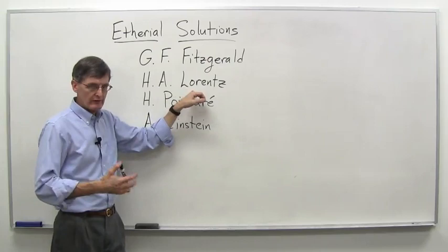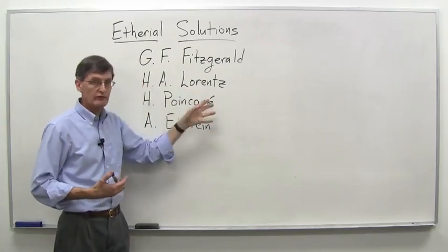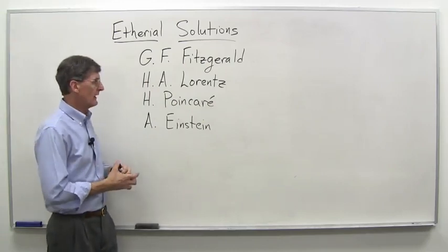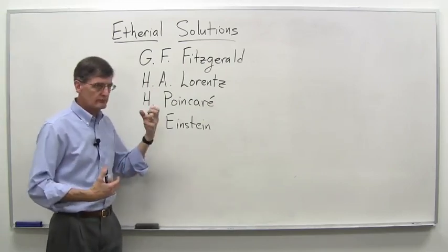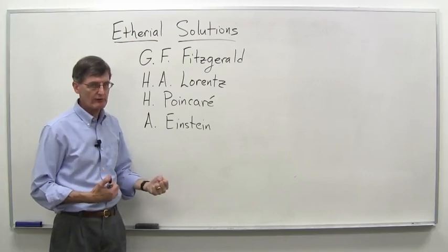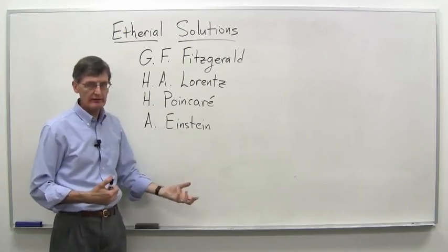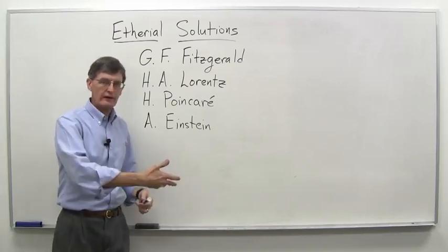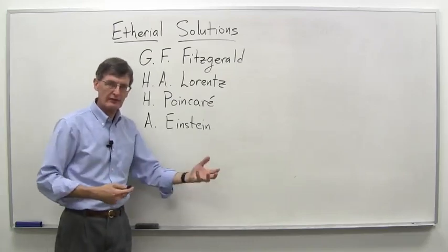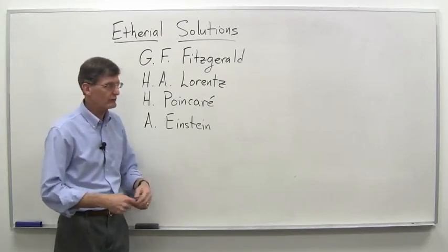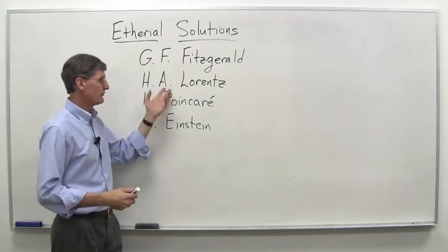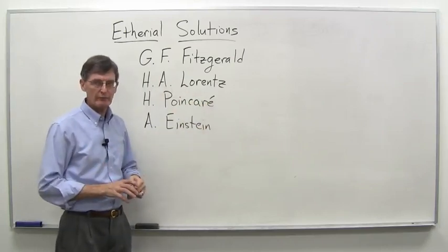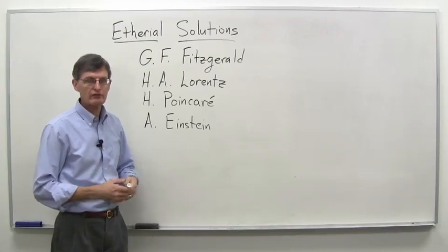A few years after this, in the mid-1890s, Lorentz, who we've mentioned before, was developing a full-fledged theory and extending Maxwell's theory and really puzzling over the Michelson-Morley result and had a similar idea. And then he mathematized it and introduced it into his theory. He later found out that Fitzgerald had actually had this idea a few years before and had sort of published it. And Lorentz, just being the kind of person he was, gave credit to Fitzgerald and therefore became known often as the Lorentz-Fitzgerald contraction.